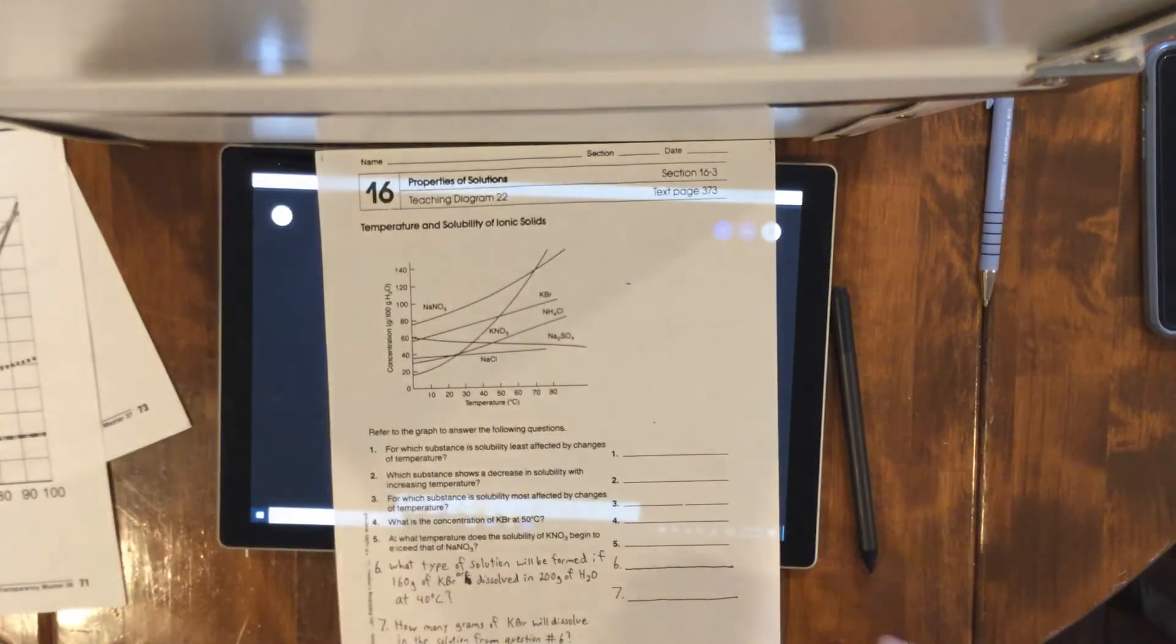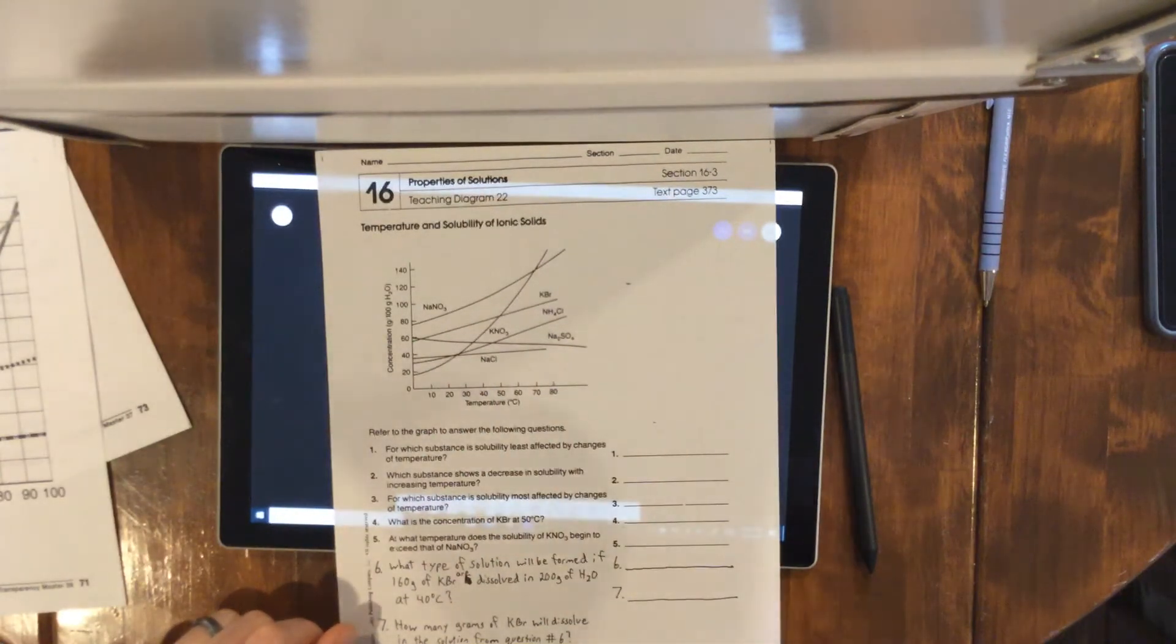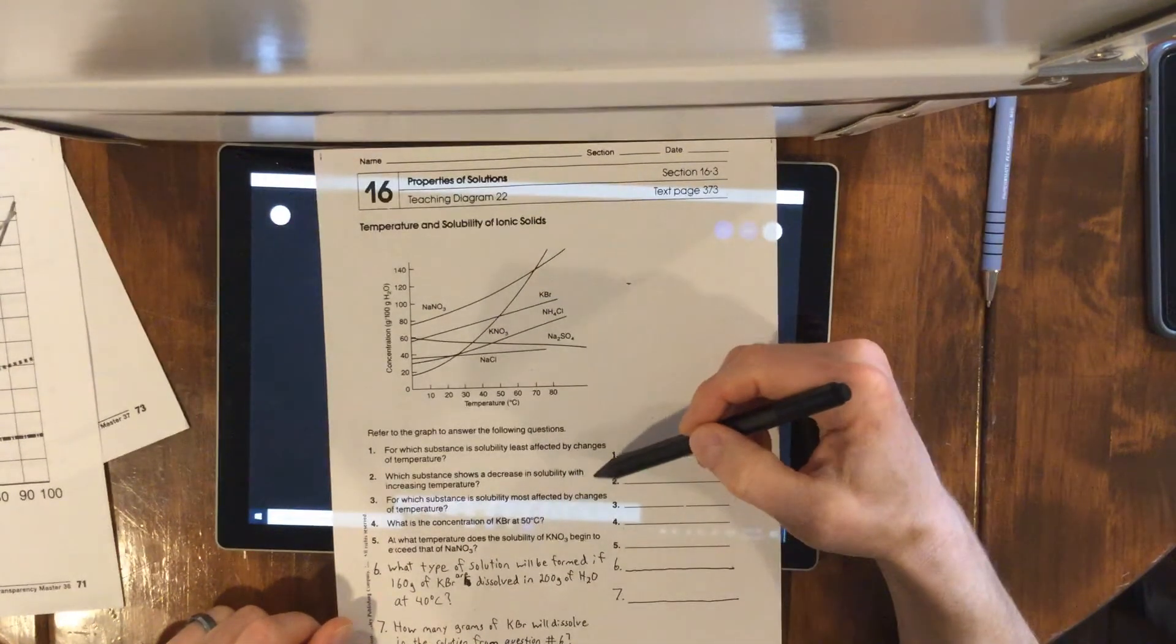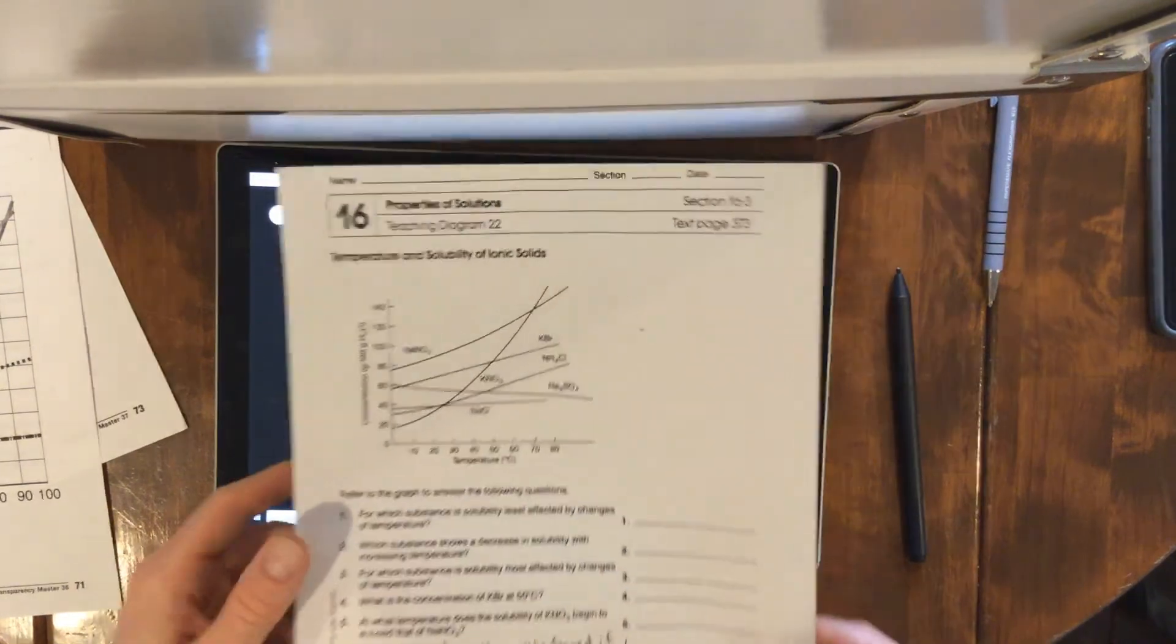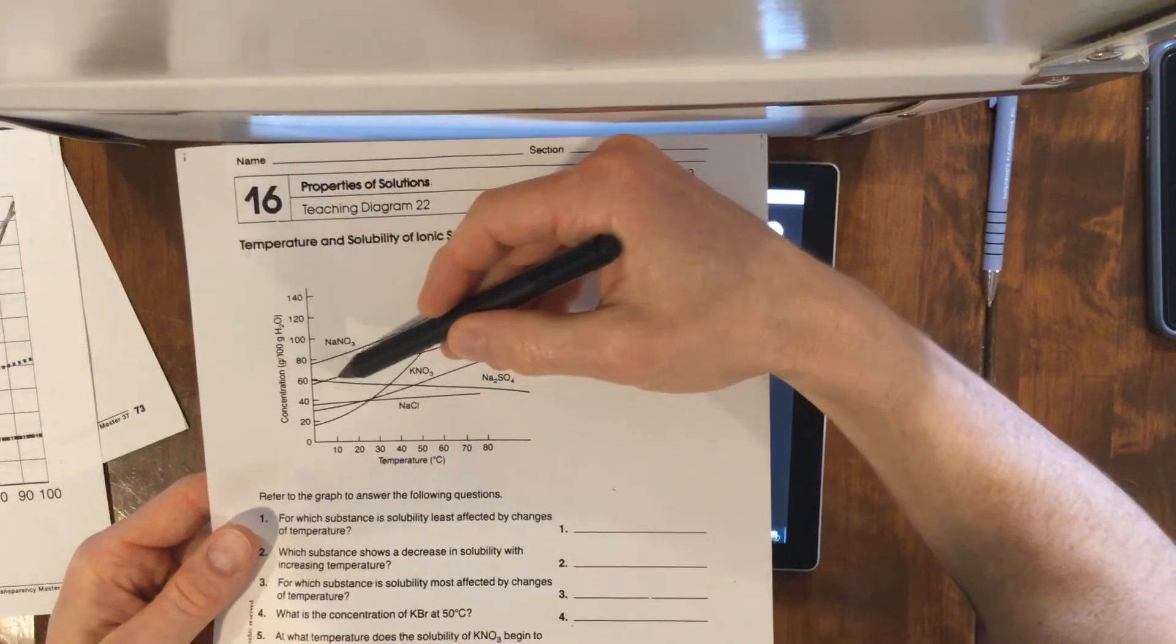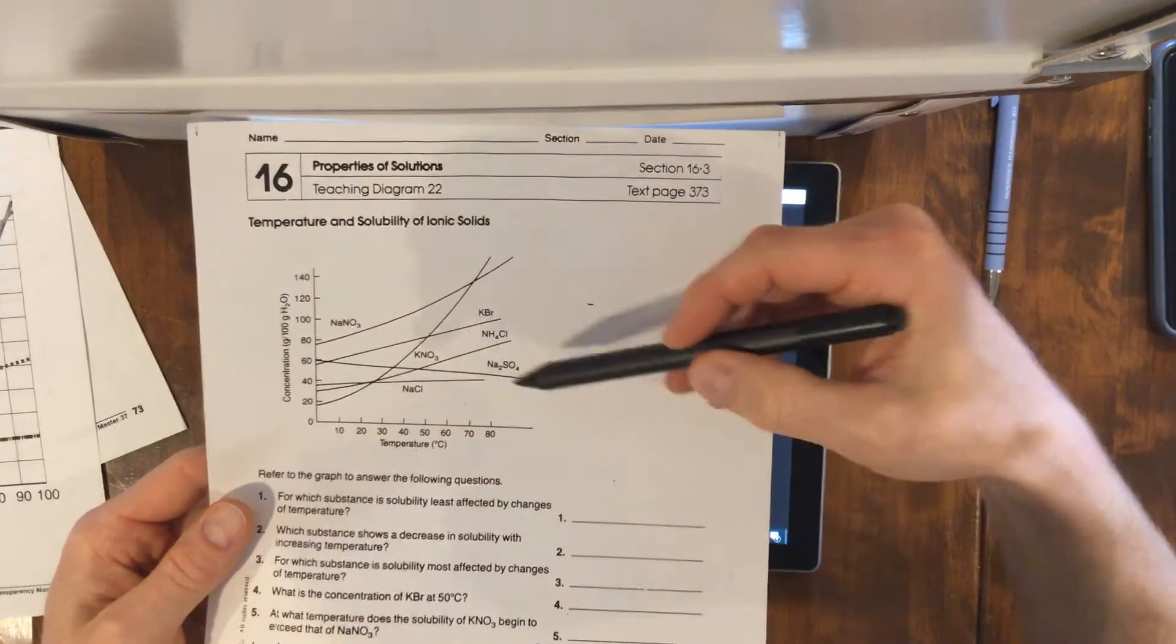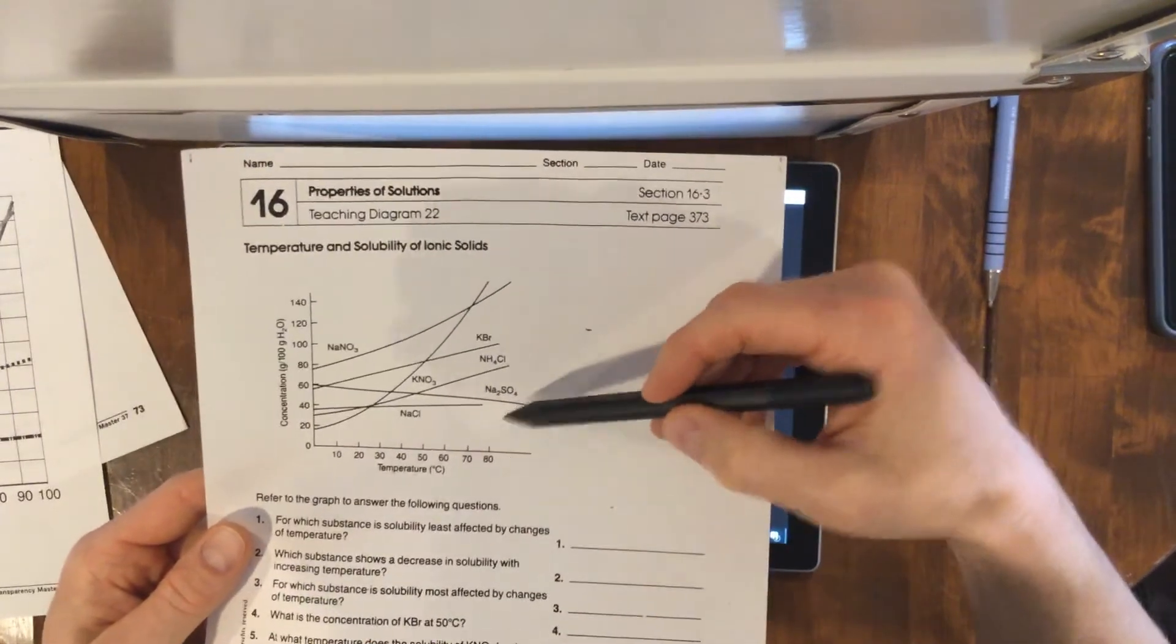So NaCl is least affected by temperature. Which substance shows a decrease in solubility with increasing temperature? Which one does not dissolve as well as temperature increases would be Na2SO4, because that line you see decreasing as temperature increases. At higher temperatures you cannot dissolve as much of it as you can at lower temperatures.